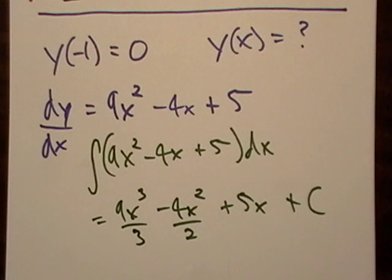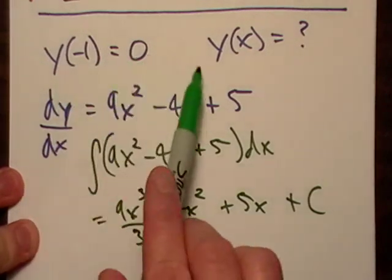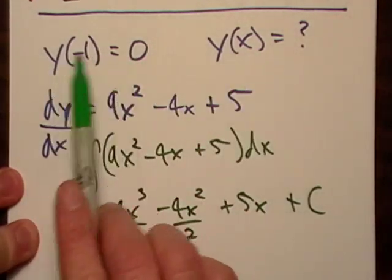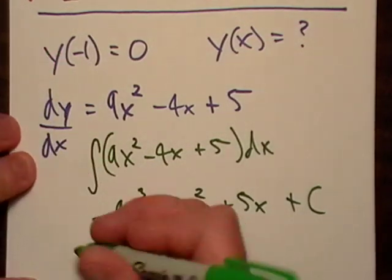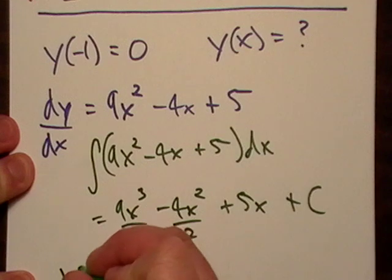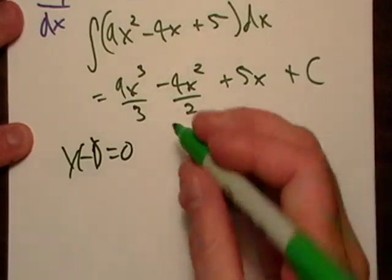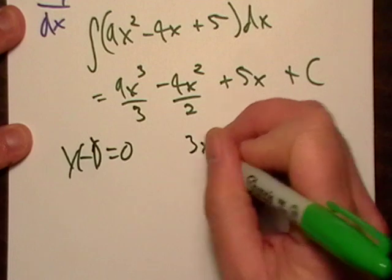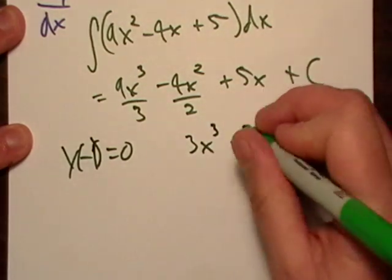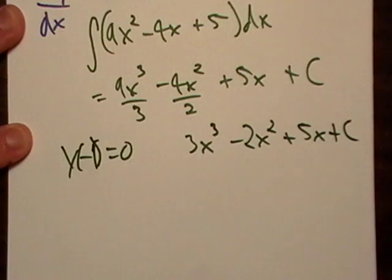But we're interested in this actual, the real function that it came from. And notice that they gave us this piece of information right here. So I'm just going to go ahead and kind of transfer this down here. This y of negative one being equal to zero. That's kind of sloppy, but just trust me. Now I'm going to simplify this anti-derivative a little bit. So we got three x to the third minus two x squared plus five x plus c.